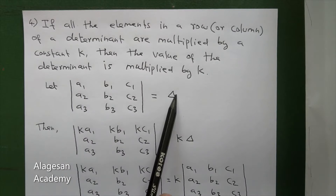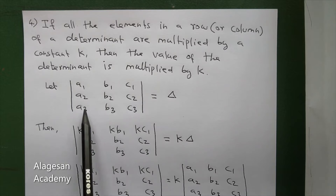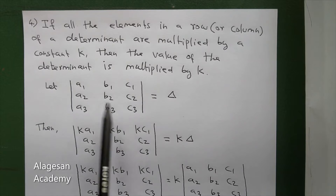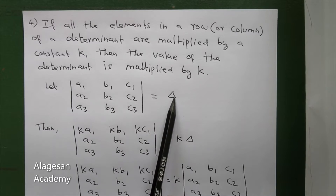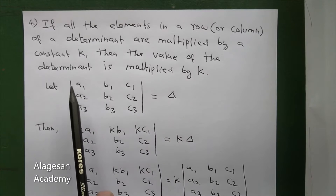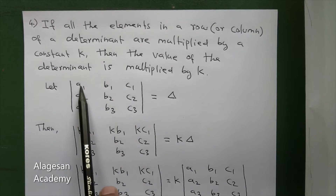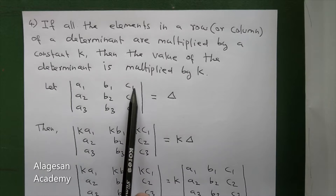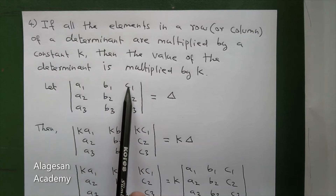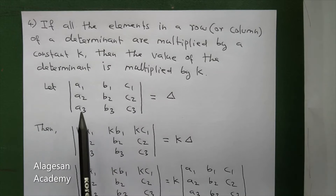Now delta is equal to the determinant with elements a1, b1, c1 in the first row; a2, b2, c2 in the second row; and a3, b3, c3 in the third row. The value of this determinant is delta. Now all the elements in the first row are multiplied by some constant k.